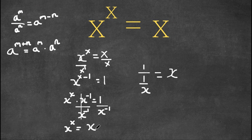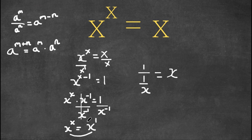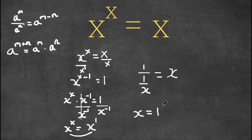Now x on the right side has an exponent of 1, so we have x to the power of x equals x to the power of 1. Because we have the same bases on both sides, meaning if the bases are the same, our exponents must be equal as well. So setting exponents equal to each other, we get x equals 1.